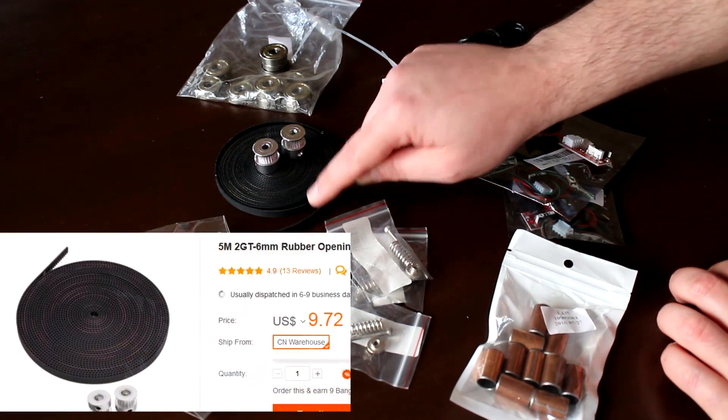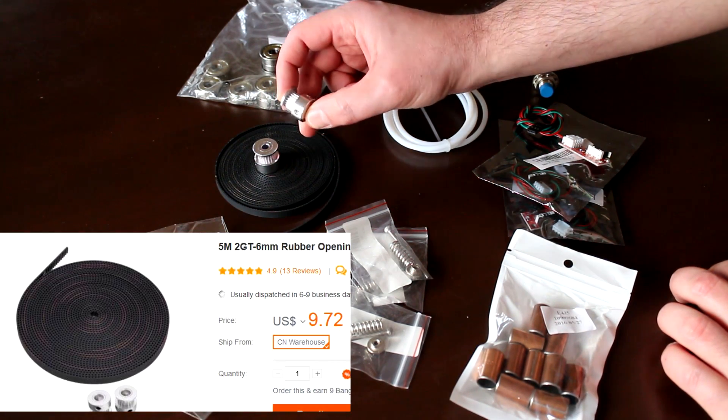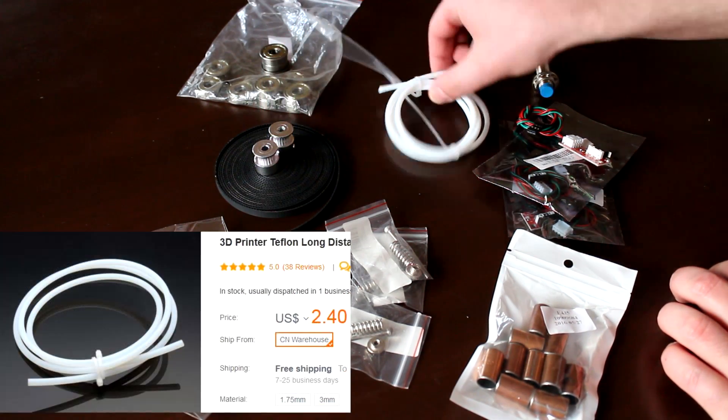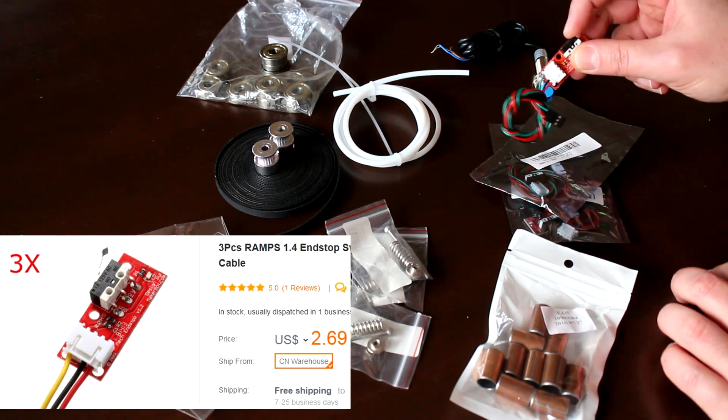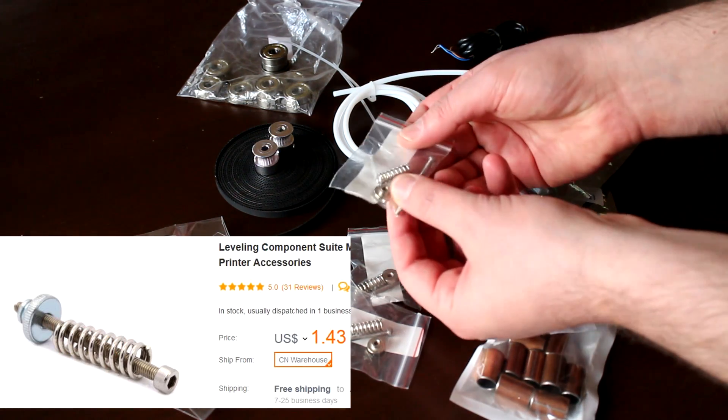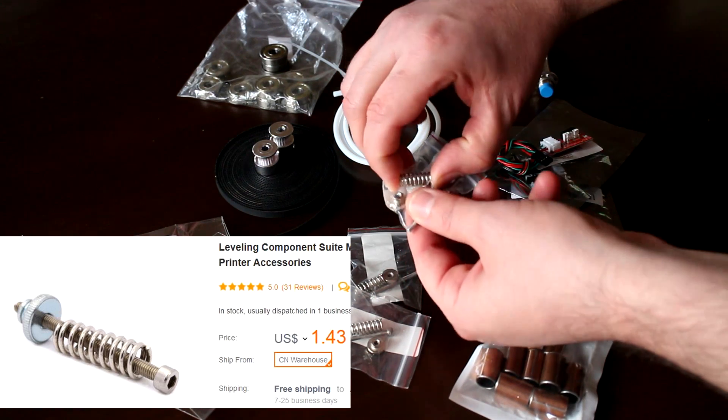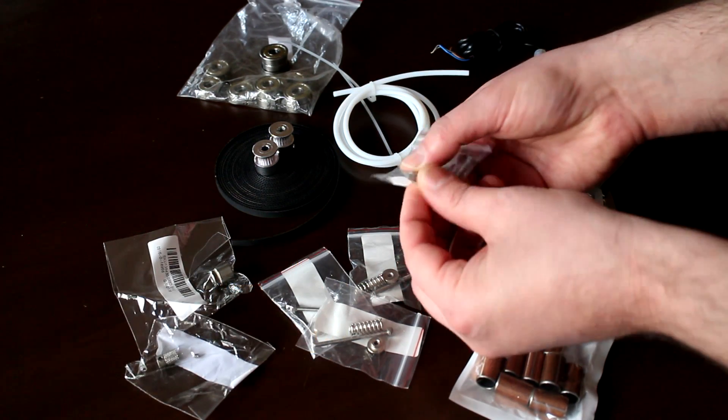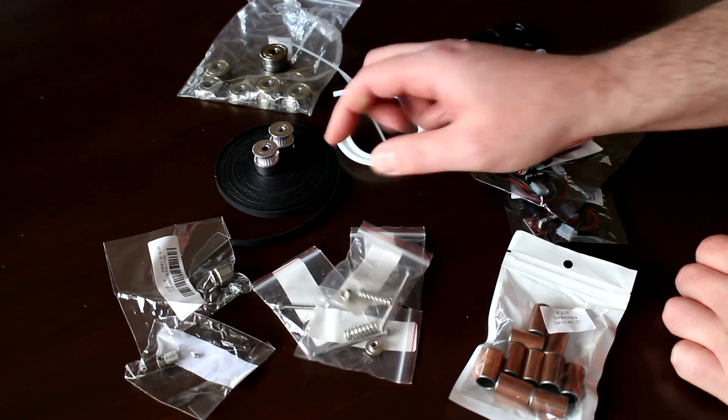We have 5 meters of GT2 belt with two 20 tooth pulleys. We have some Teflon tube. We have three end stops, one for each axis. For the actual bed itself, I saw these online, these are quite cheap. There's a long M3 screw, quite a big stiff spring, and also a leveling knob. I picked up four of those to level the print bed.